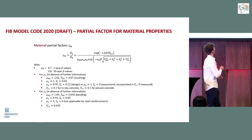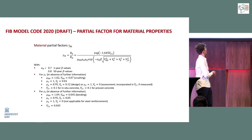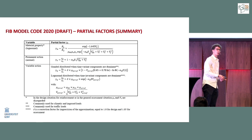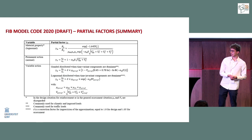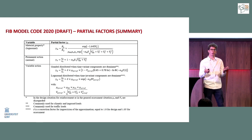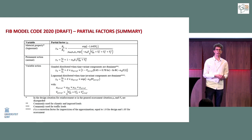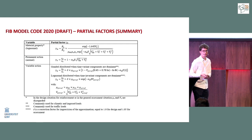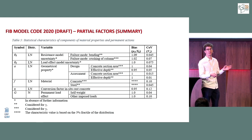There is also a partial factor for material characteristics. All the equations are combined into a table — there is a whole chapter in Model Code 2020 on this new partial factor method. In a paper by Professor Caspeele and myself, we created summary tables to bring all the information together in one place for easier reference.